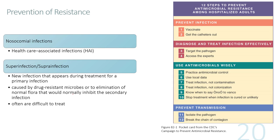Other ways to prevent resistance include addressing nosocomial infections — healthcare-associated infections acquired as a result of being treated. There is also the concept of superinfection, where a secondary infection occurs during treatment for a primary infection. Secondary superinfections are often more difficult to treat because they appear while the patient is already being prescribed antimicrobial agents. There are 12 steps outlined to prevent antimicrobial resistance.